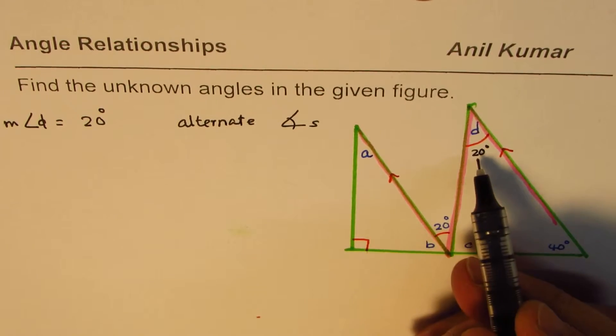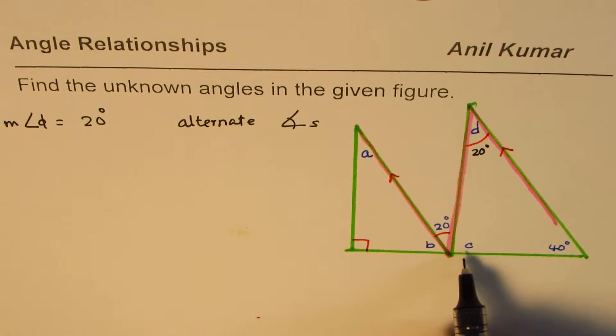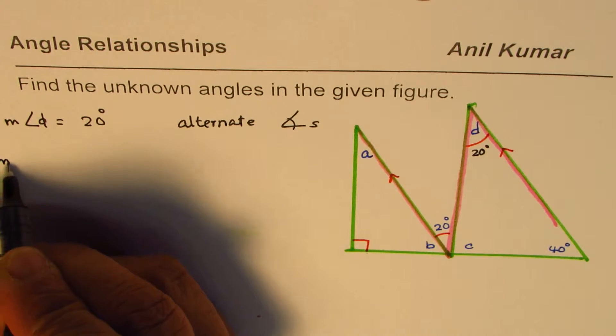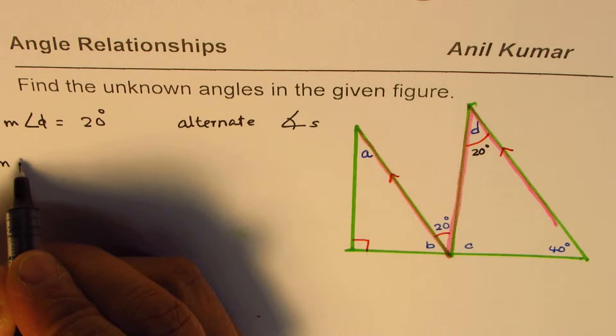Once you know D, you can find angle C because the sum of angles in the triangle is 180 degrees. This diagram is not to scale.